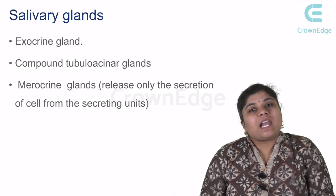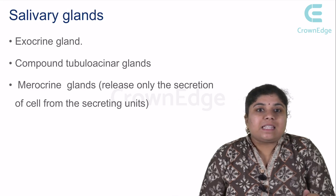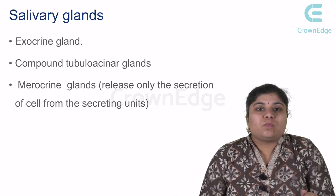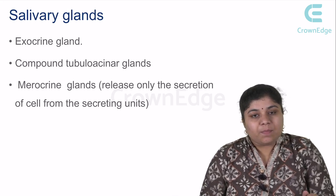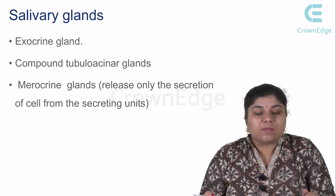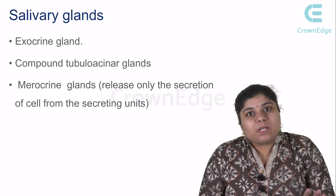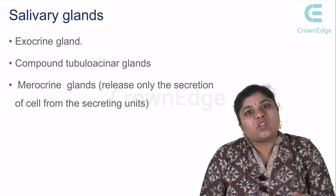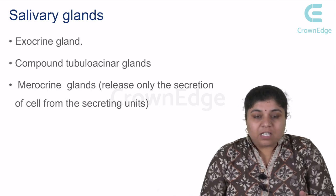Salivary glands are a group of exocrine glands, and these have a compound tubular acinar architecture. The mode of secretion is merocrine in nature — we'll learn about merocrine secretion in the further slides.